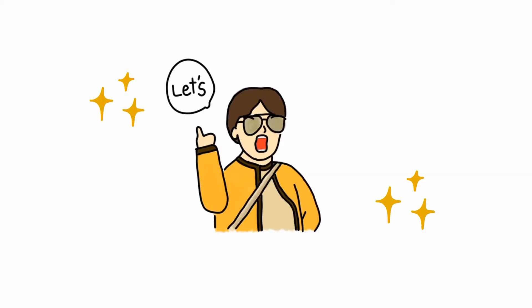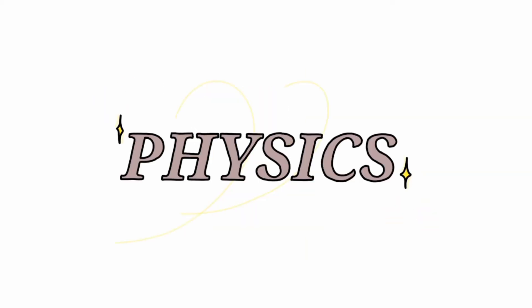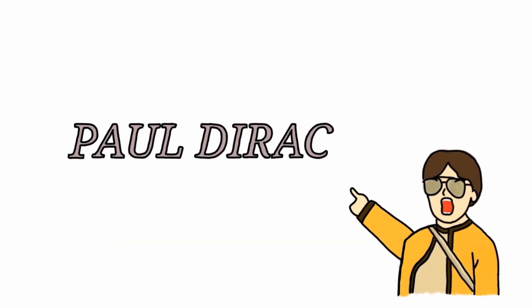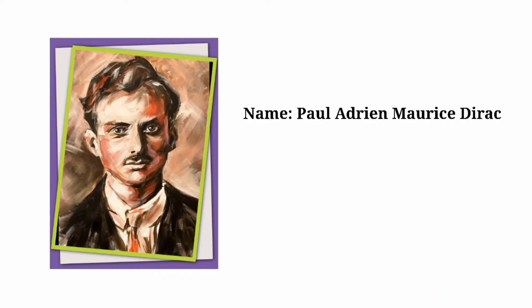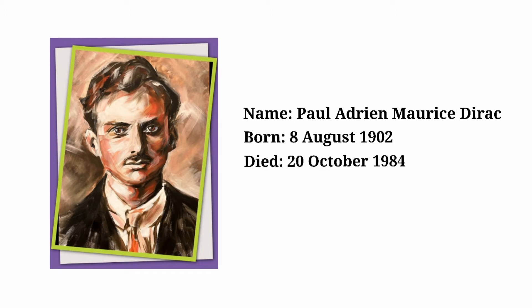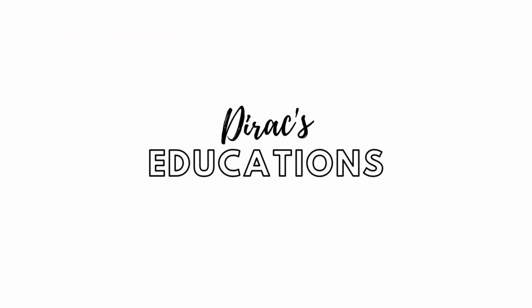Hello, let's talk about one of our Nobel laureates in the field of physics: Paul Dirac, a Nobel laureate in the year 1933. His full name is Paul Adrian Morris Dirac. He was born on 8 August 1902 and died on 20 October 1984. He specialized in the field of theoretical physics.